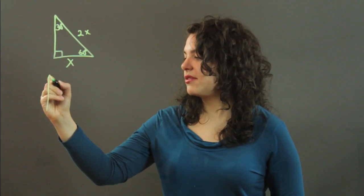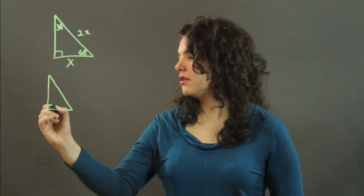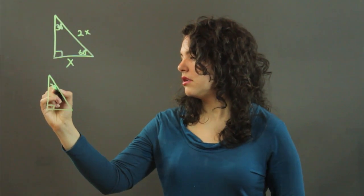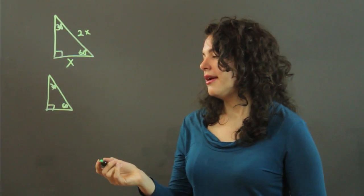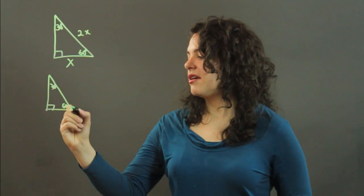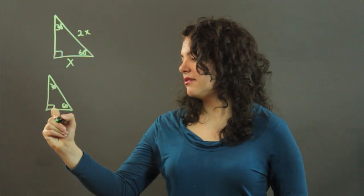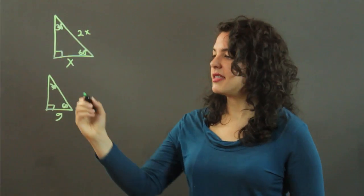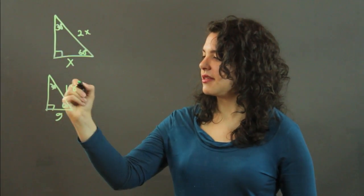So, let's say we have a 30, 60, 90. And we have a short side that has a length of 9. Its hypotenuse has a length of 18.